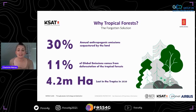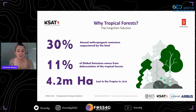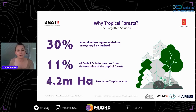In 2020, as an example, the tropics lost 4.2 million hectares of primary forests, leading to carbon emissions equivalent to the annual emissions of 570 million cars — considerably more than there are on the planet. Tropical forests play a really important role in supporting our planet and not contributing to global emissions.